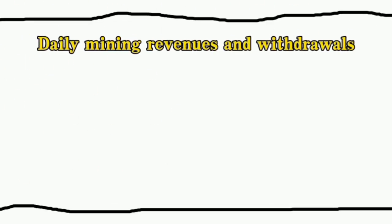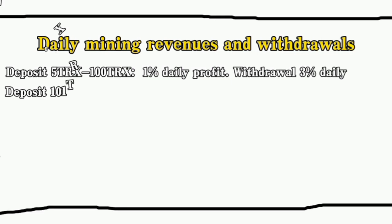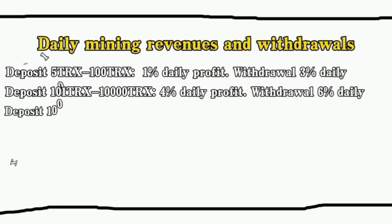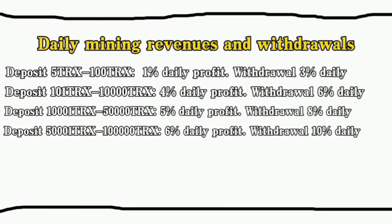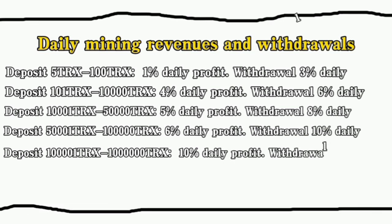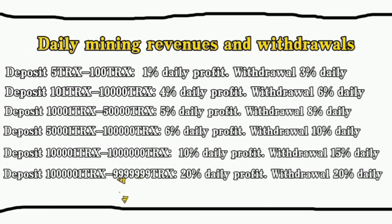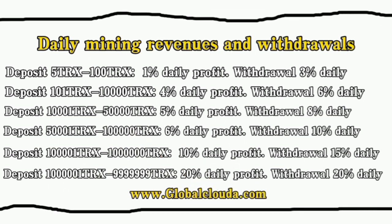And withdrawals. Deposit 5–100 TRX to get 1% daily profit and 3% daily withdrawal. Deposit 101–10,000 TRX to get 4% daily profit and 6% daily withdrawal. Deposit 10,001–100,000 TRX to get 5% daily profit and 8% daily withdrawal. Deposit 100,001–1,000,000 TRX to get 10% daily profit and 15% daily withdrawal. Deposit up to 9,999,999 TRX to get 20% daily profit and 20% daily withdrawal.